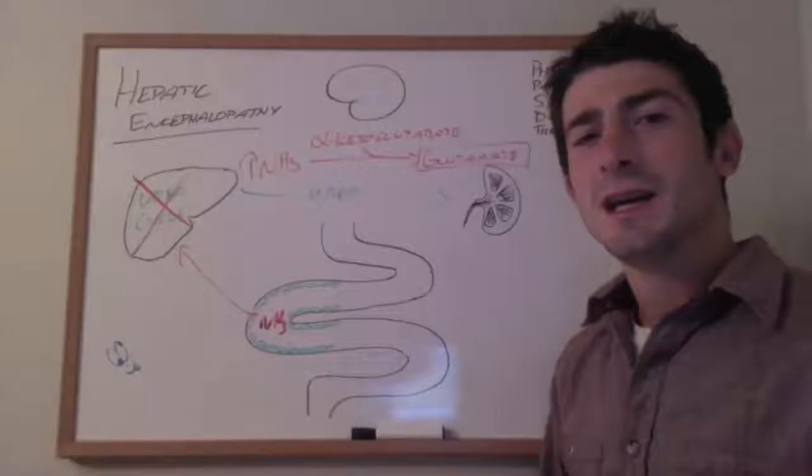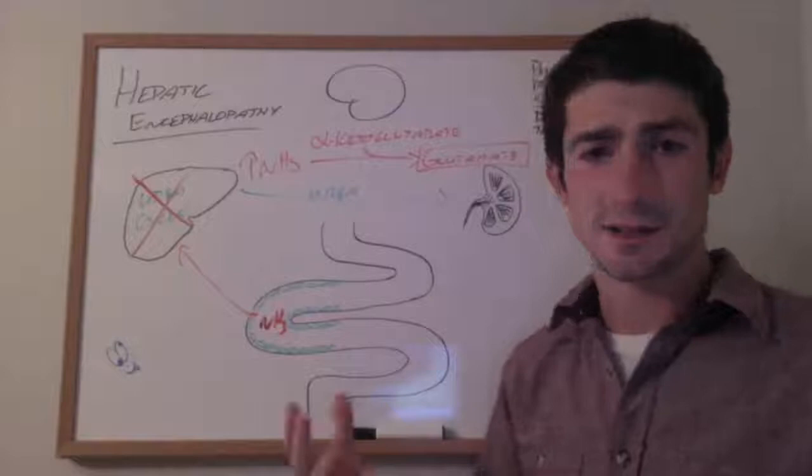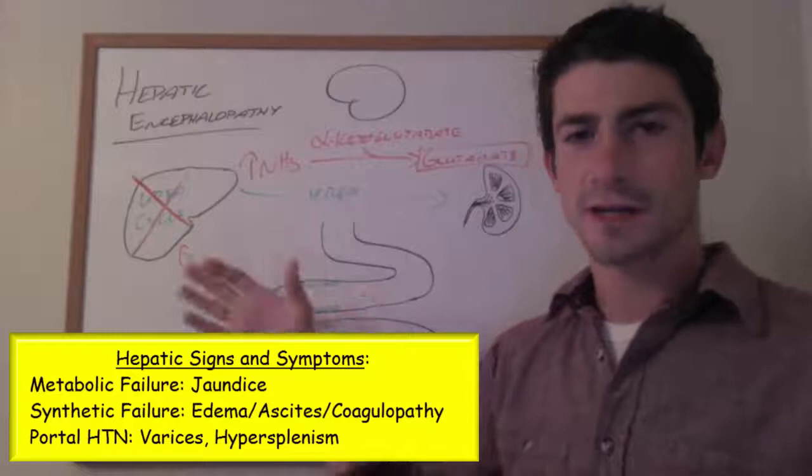They may start to look like this guy over here. In addition, due to the underlying liver pathology, you would expect to see signs of liver damage: jaundice, scleral icterus, peripheral edema, varices, signs of underlying liver pathology.